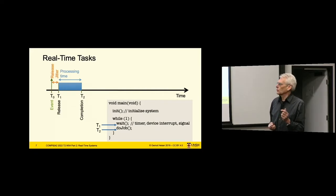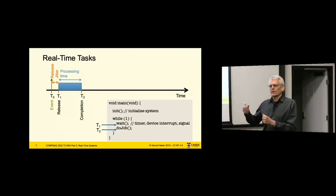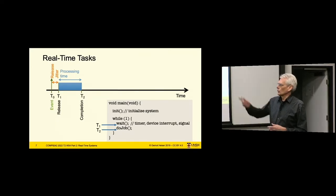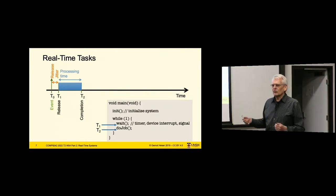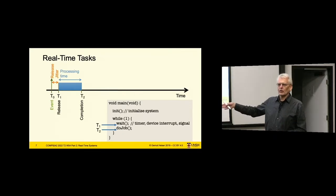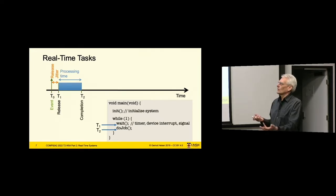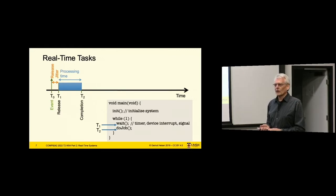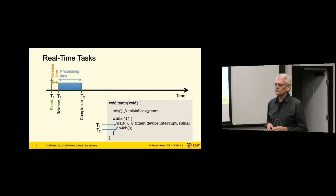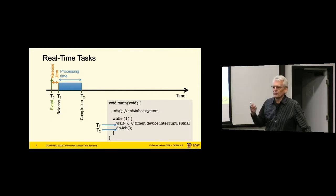The release jitter is the difference between the time when the event happens and the time when the code dealing with it starts actually executing. There's also completion jitter — the fluctuation in the time from the event happening until we complete our computation. Completion jitter includes the release jitter. What else would completion jitter include? The processing itself may not be constant time, and generally it is not unless you have a very simple algorithm on very simple hardware.